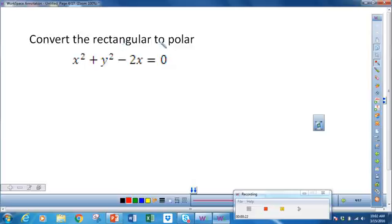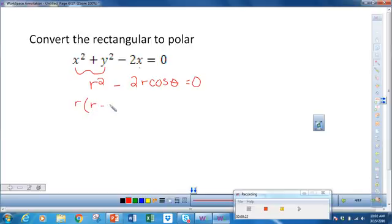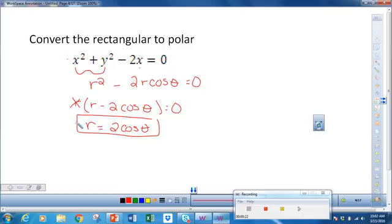So we're going to start by converting rectangular to polar. We know that x² + y² = r² and that x = r cos θ. So if I want to convert this to polar, I can factor out an r. From our algebra skills, we can solve this by saying r = 0, which we know does not seem to be true. So using the second equation, moving 2 cos θ to the other side, r = 2 cos θ. And now we've gone from rectangular coordinates to polar form.